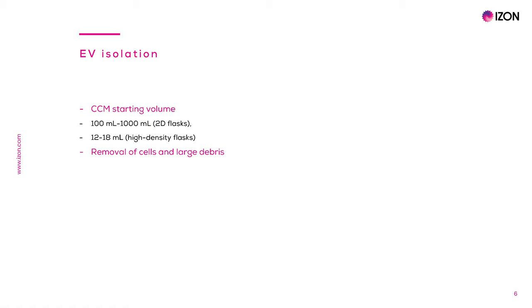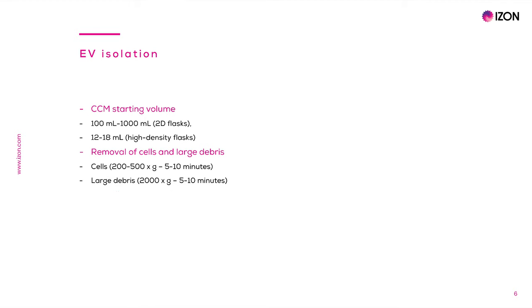The next step in EV isolation is to remove remaining cells from CCM by centrifuging at 200 to 500 G for 5 minutes at room temperature or 37 degrees. It is important in this step to be gentle and not damage the cells with higher spins, since this will artificially release cell death-derived EVs. Then the supernatant from the cell-removing spin is transferred to another sterile tube, where the sample is centrifuged at 2000 G for 5 to 10 minutes to pellet large debris. Now cell and debris-free CCM is ready for EV isolation.